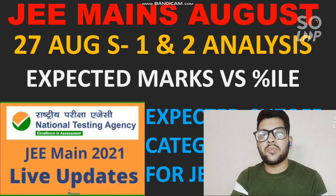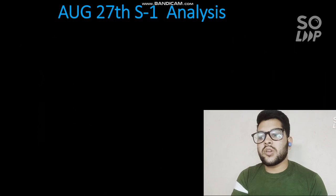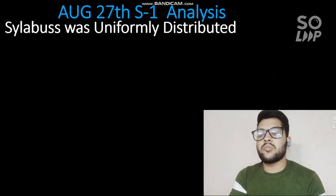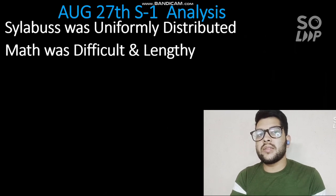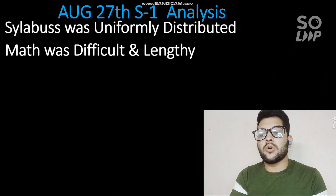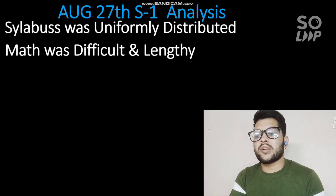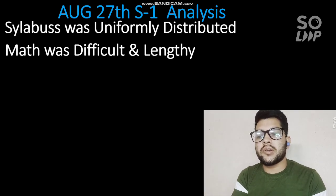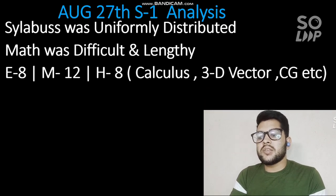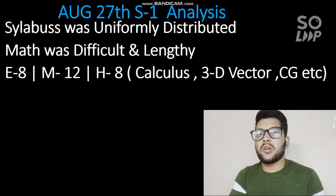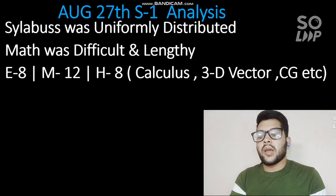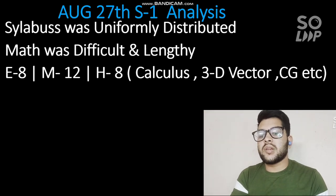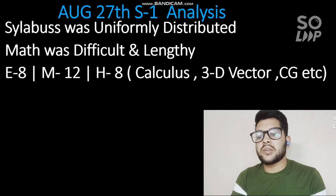Let's start with the 27th August Shift 1 analysis. The syllabus was uniformly distributed - every topic had a question. Math was difficult and lengthy; many institutes including FIITJEE considered it difficult and lengthy. The number of questions: easy 8, moderate 12, hard 8. More questions were asked from calculus, 3D vectors, coordinate geometry, matrices, determinants, and probability.